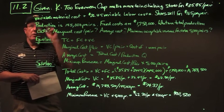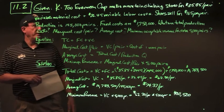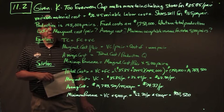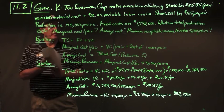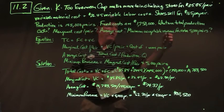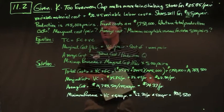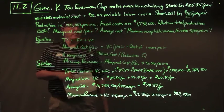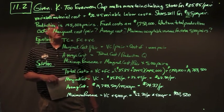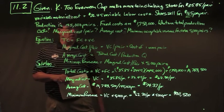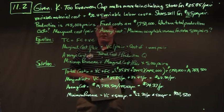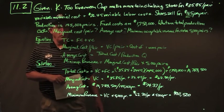In problem 11.2, K2 Everwear Corp makes mountain climbing shoes with variable material of $35.85 a pair and variable labor of $26.45. Shoes sell for $165 a pair. Production is 145,000 pairs, fixed cost $1.75 million. We need total production costs, marginal cost per pair, average cost per pair, and minimum acceptable sales revenue for an extra 5,000-pair one-time order.